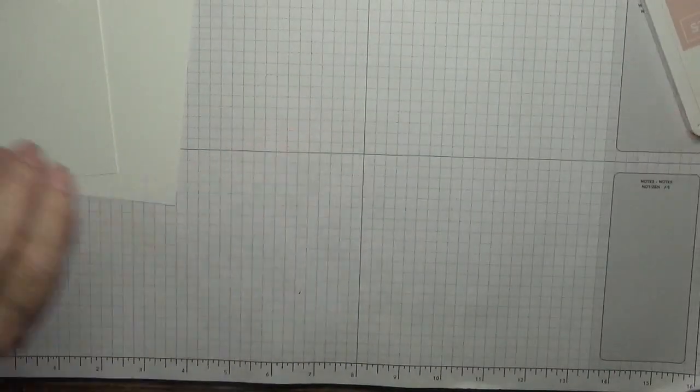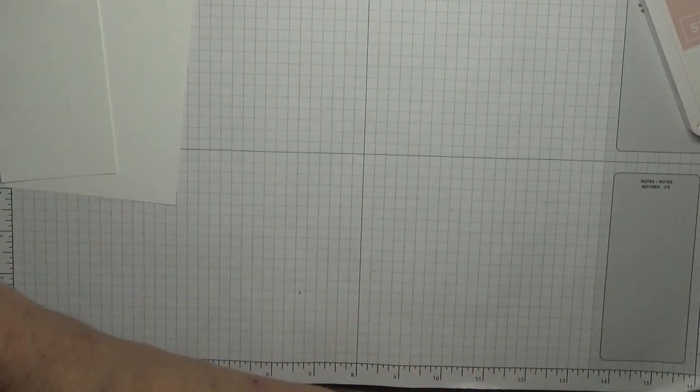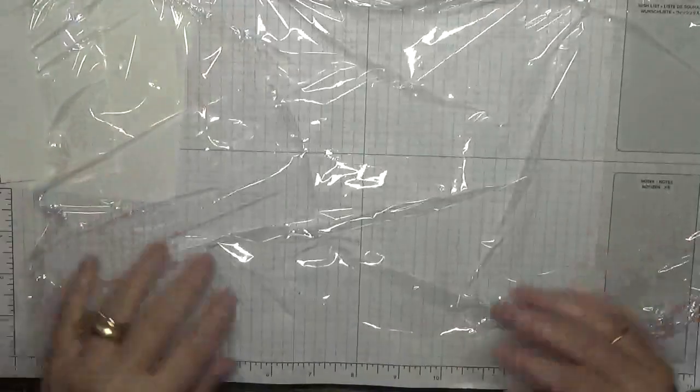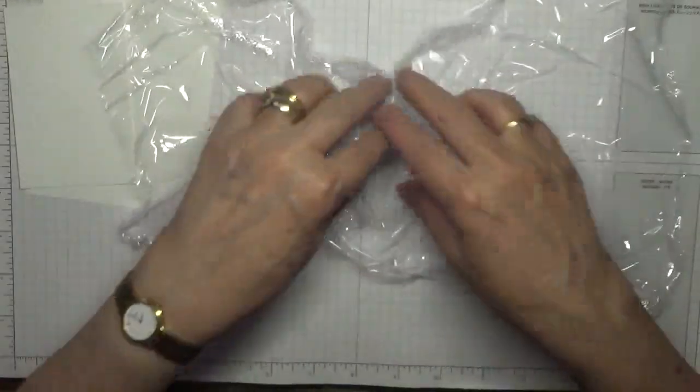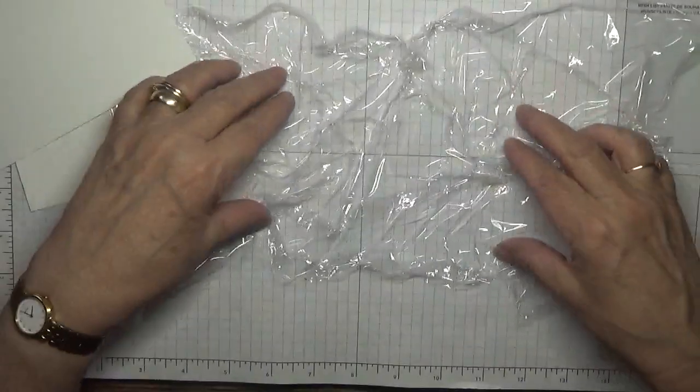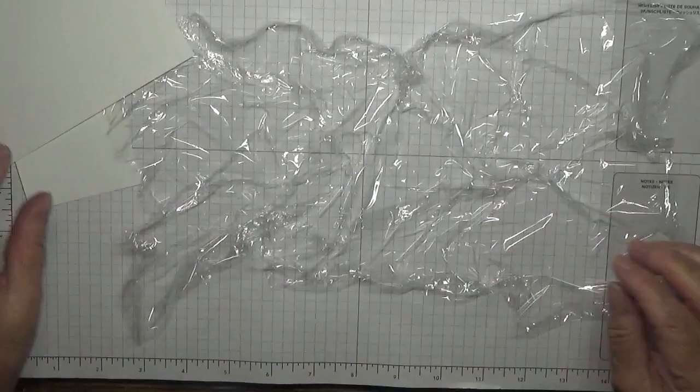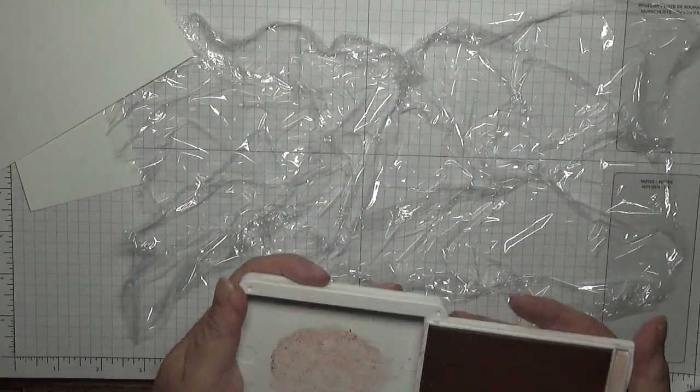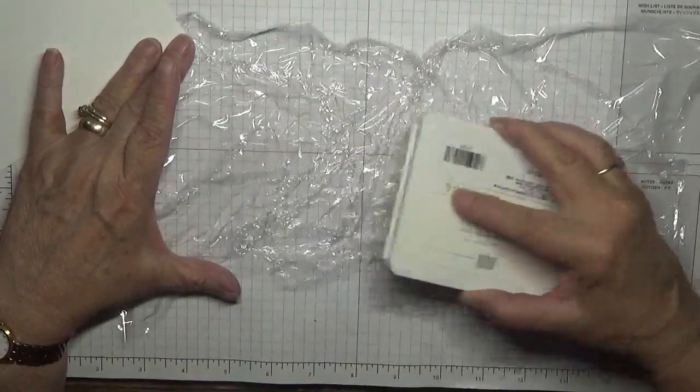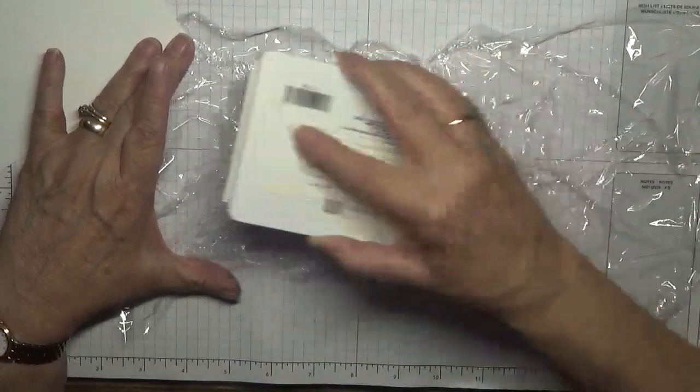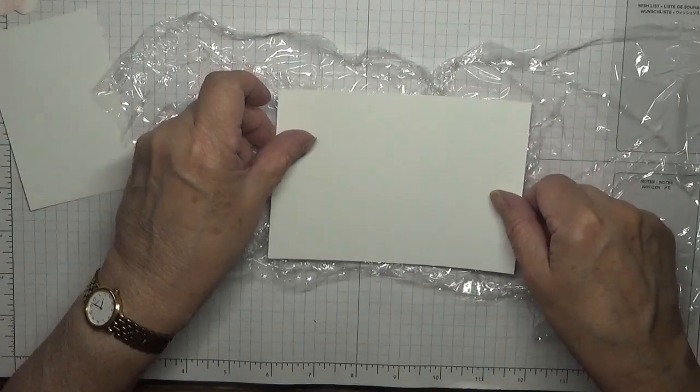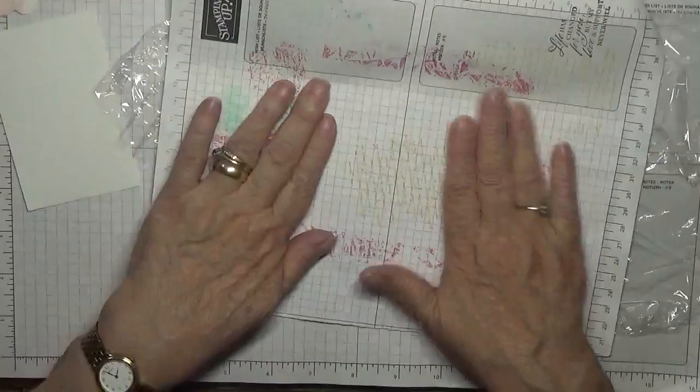Now for the background you need some Blushing Bride ink and believe it or not, a piece of cling film. I have some cling film here. I need a piece big enough for the card, mine's a little bit bigger. I'm just gonna scrunch it up, not too much because it's got to be as wide as the card, just like that. Then I'm going to with my Blushing Bride, I'm just going to ink the cling film like that. Pop that on top with a bit of paper, just wipe it off.